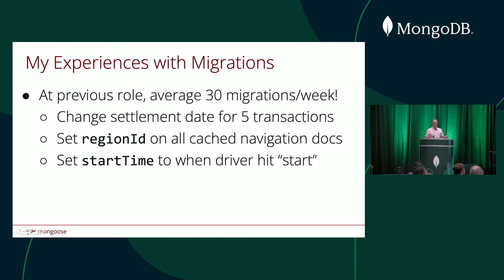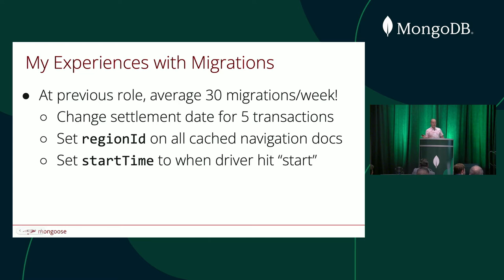Another example: when we first wrote our order logic, we made it so that the start time property was set to when the order was scheduled to start, not when it was actually started — as in when the user clicked start. This was a semantic misinterpretation that made the data team's life difficult, because we didn't really have a property that stored when the user actually clicked start. So we migrated so that start time referred to when the user clicked start, as opposed to when the order was scheduled to start.